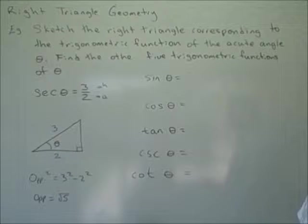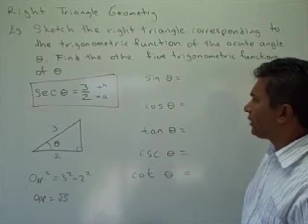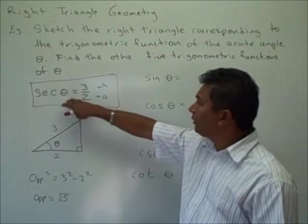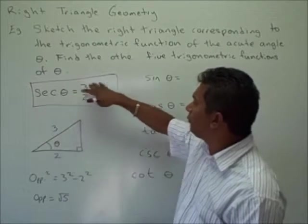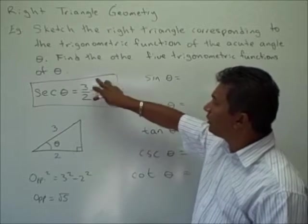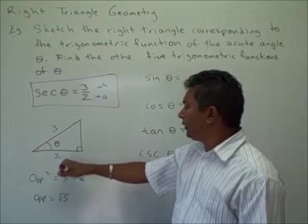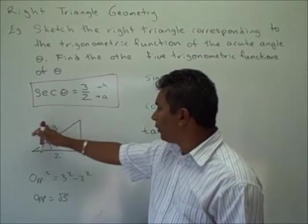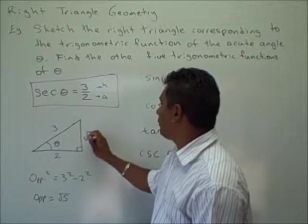Here's another example of finding the six trigonometric functions of a right triangle. This time we're given that secant theta is equal to 3 over 2. We know secant is the inverse of cosine, and since cosine is adjacent over hypotenuse, secant is therefore hypotenuse over adjacent. We can use this to sketch a right triangle where the hypotenuse is 3 and the adjacent is 2. Using the Pythagorean theorem, the opposite side equals the square root of 5.